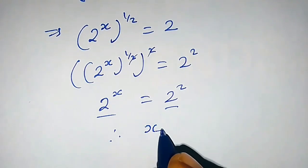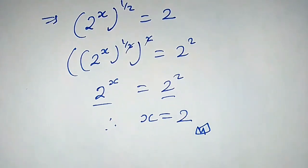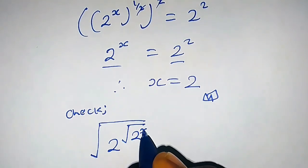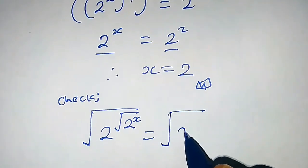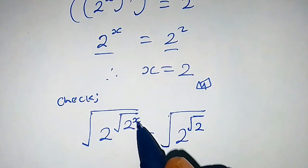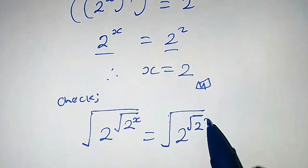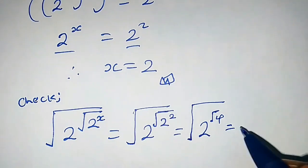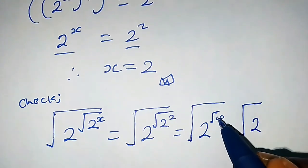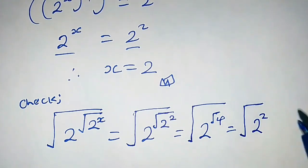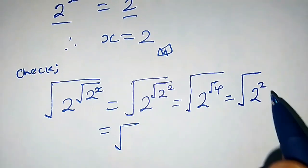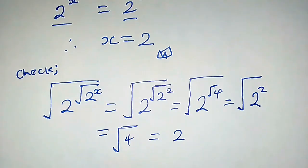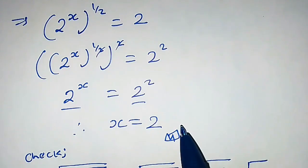Since the base is the same, therefore x equals 2. Let's verify: we have square root of 2 raised by square root of 2 raised by x, substituting x equals 2 gives square root of 2 raised by square root of 2 squared, which is square root of 2 raised by 2, that is square root of 4, which equals 2. This matches the right-hand side, so indeed x equals 2 is the required solution.